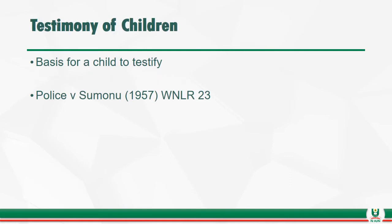Let's look at the testimony of children. We have seen that all sane adults are competent witnesses, and the law did not prescribe a specific age for a child to give evidence. The law says that a child is competent to give evidence if they, first, understand the questions put to them, and secondly, provide rational answers to those questions. For this purpose, the court conducts preliminary tests to determine whether the child is possessed of sufficient intelligence to provide rational answers to questions put to him. The court asks the child certain questions that are not related to the case in court.